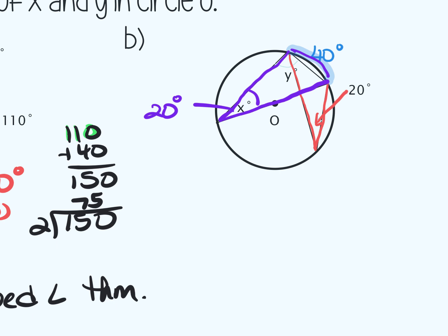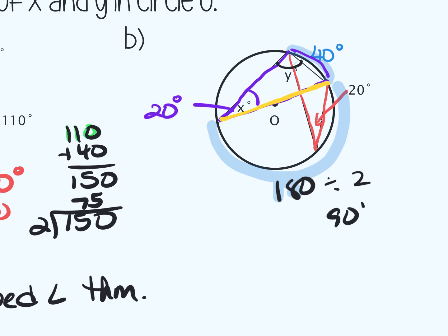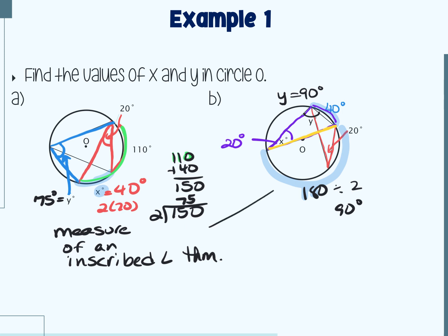To find angle y, notice that this line is the diameter, so this right triangle is inscribed in this semicircle. The intercepted arc is 180, divided by 2 gives 90 degrees. Or you could use the inscribed right triangle theorem — either way, y equals 90 degrees.